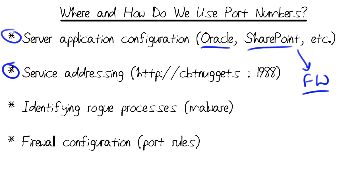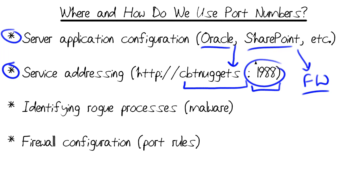Service addressing is another way to use port numbers. Once we install our enterprise application, we advertise the service using, generally speaking, a host name and the port number — unless it's well-known. If it's well-known, we can leave it off. We also use port numbers for troubleshooting purposes — specifically, we can troubleshoot malware and identify rogue processes, as I'll show you in our brief demo coming up.